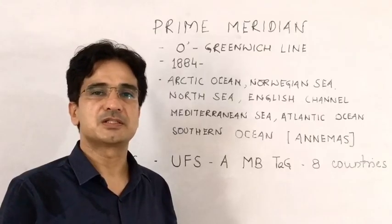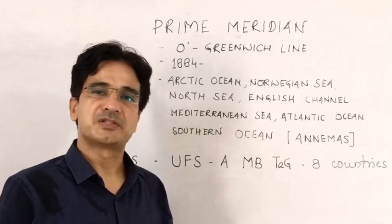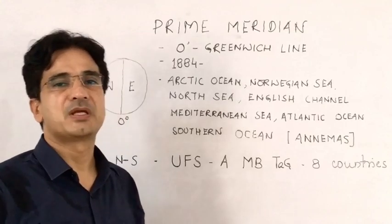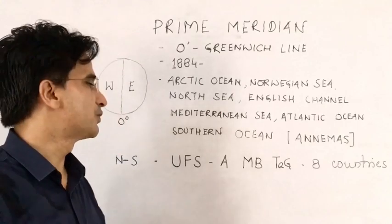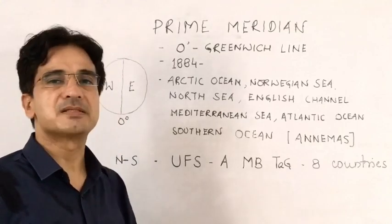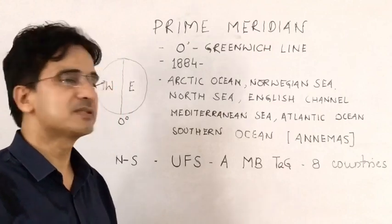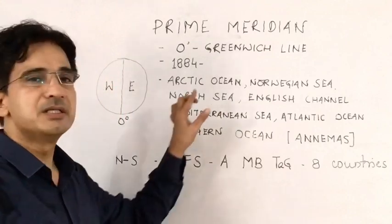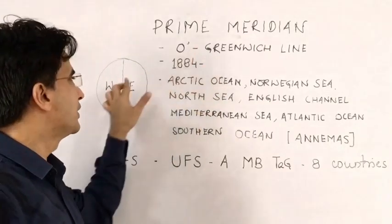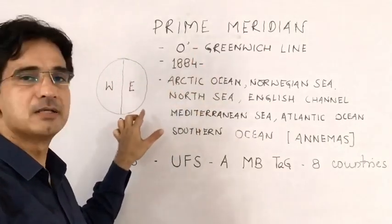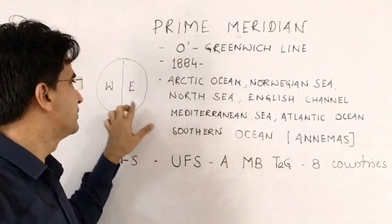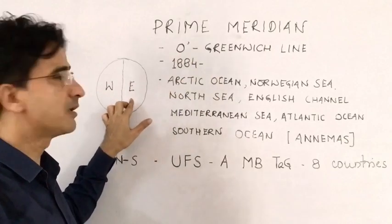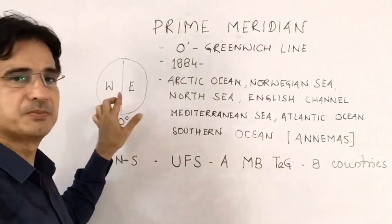Today we discuss the Prime Meridian and various water bodies and countries through which it passes. Prime Meridian is zero degree longitude that divides the earth into two hemispheres: eastern hemisphere and western hemisphere.